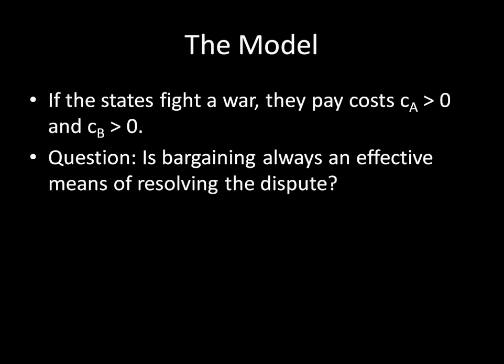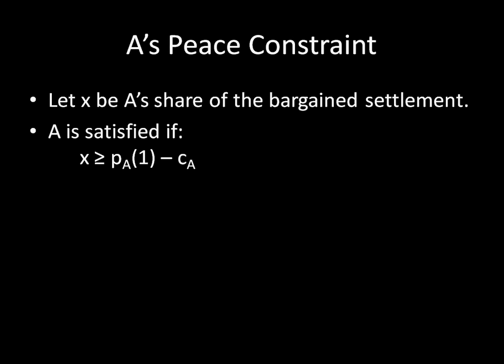The ultimate question is: is bargaining always an effective means of resolving the dispute? And the answer is going to be yes. Let X be A's share of the bargained settlement. Then A is satisfied if X is greater than or equal to the probability of victory times what you get if you win — which is 1 — minus the costs of fighting CA. So you get X ≥ PA − CA. That's how much A needs to receive in a bargained settlement to be happy and not want to fight.